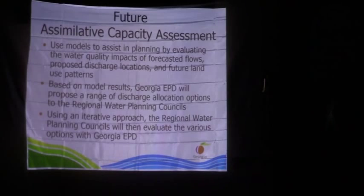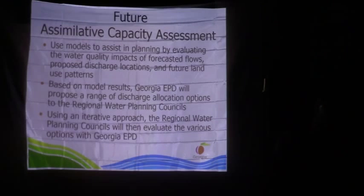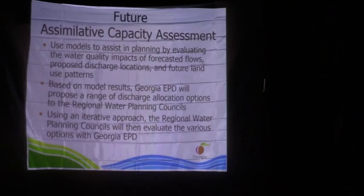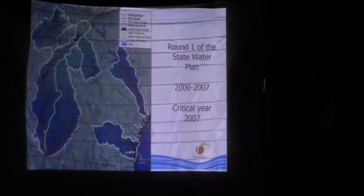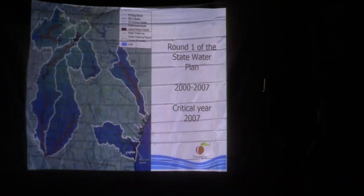But there are things the councils need to consider: Are we going to put in regional plants? Are we going to change over to land application systems (LAS)? There are some things we need to think about when we do that. This is what was originally done with the statewide water plan.